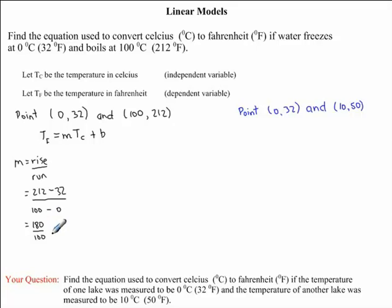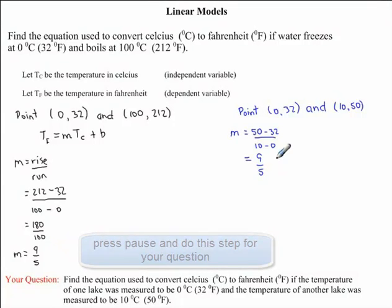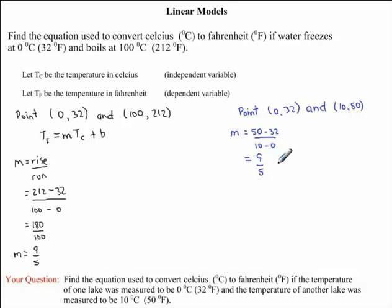Now we can reduce this fraction. We'll notice that 20 goes into both 180 and 100 evenly, so this results in the fraction 9 over 5. So this is our slope. I would now like you to find the slope in the question you were given. You should find that your slope is also 9 over 5.